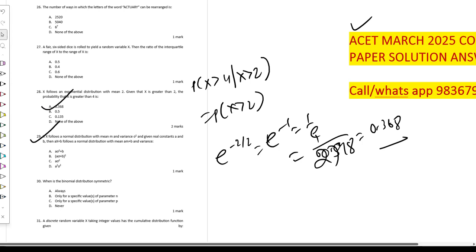x follows normal distribution. It is pretty easy now. With mean m and variance sigma square, given that the real constants a and b, ax plus b follows a normal distribution with mean am plus b and the variance we need to find out here.